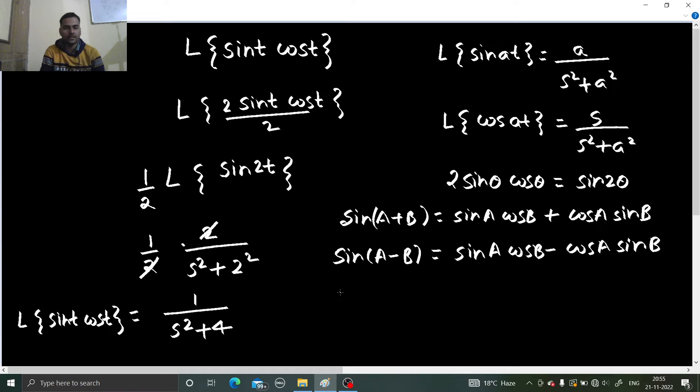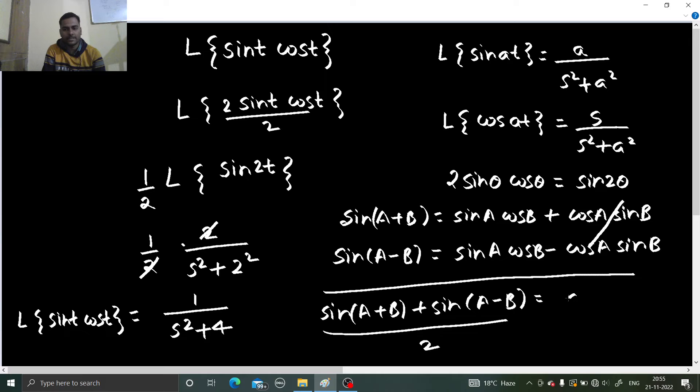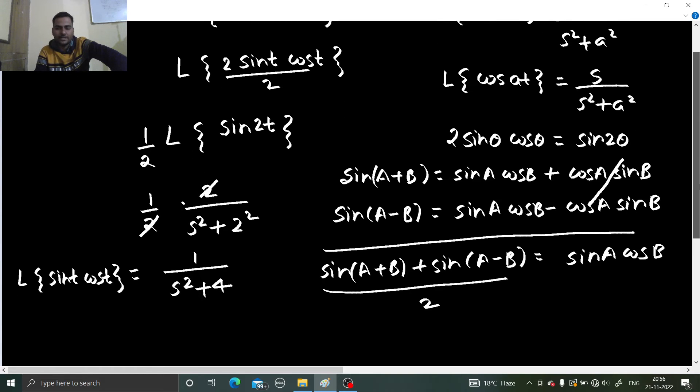What do you want? Sin a cos b term. So if I'm to retain this, just add them. If I add them this one gets cancelled, and if I divide them by 2 I'm going to get sin a cos b. So whenever someone says sin a cos b, it's sin of a plus b plus sin of a minus b divided by 2.